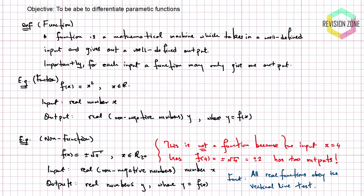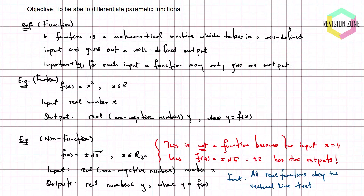Let's look at some basic examples. We have f(x) = x², a standard function where x can be any real number — this is our input. When we stick a real number into f, the function squares it and the answer is our output, which we label y. For every real number you put in, squaring always makes it positive, so y is non-negative. The key idea: for each number in, you only get one number out.